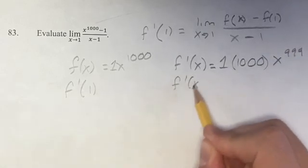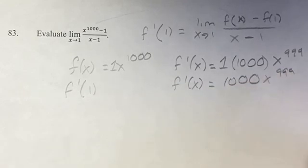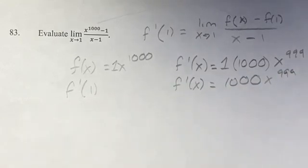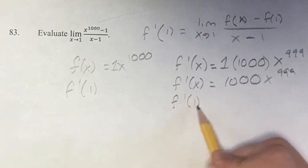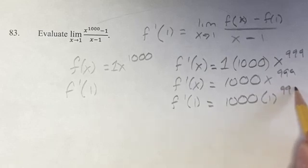And therefore, the derivative is going to be 1,000x to the 999. This also doesn't look like it's going to be super easy to evaluate until you actually plug in 1. You get 1,000 times 1 to the 999.